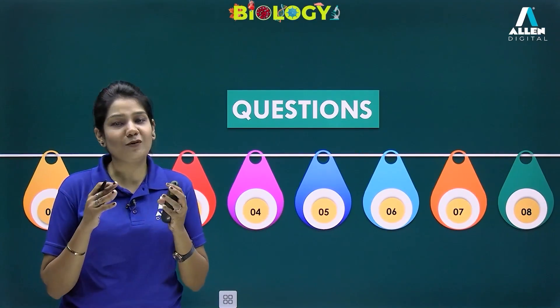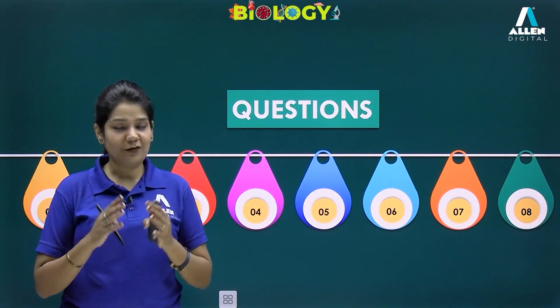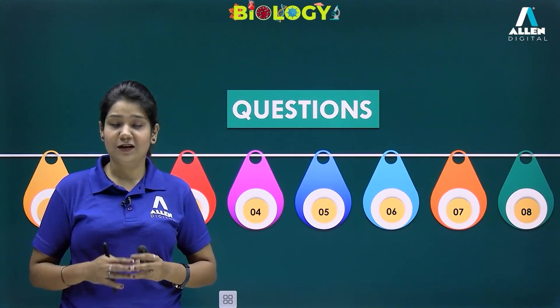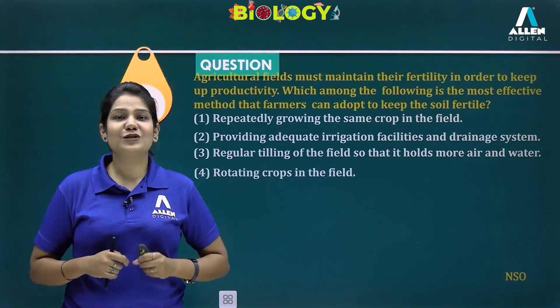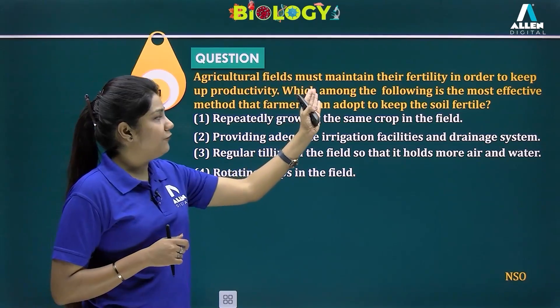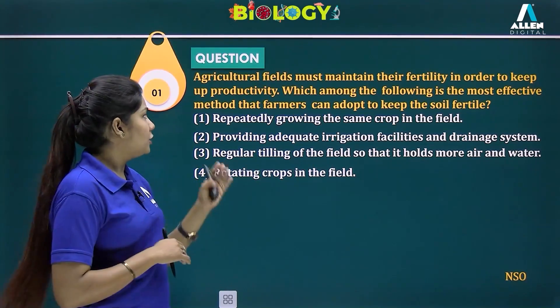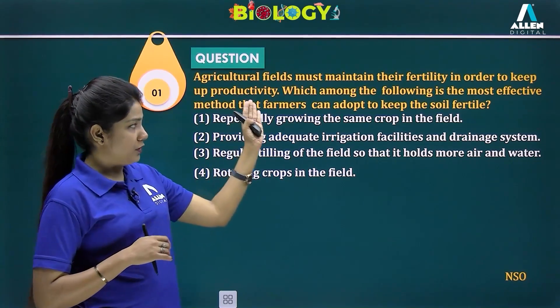These were all the traditional methods of irrigation. Now we need to proceed further and discuss some questions related to the topics we have studied. Starting with the first question: agricultural fields must maintain their fertility in order to keep up productivity.